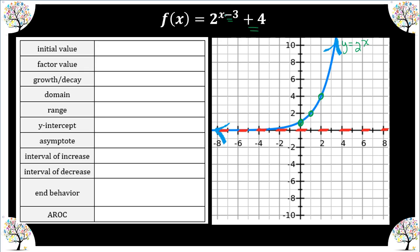This is (x - 3), so this is going to be a shift to the right — we're going to shift three to the right. And then we're going to shift four up. So I'm going to take my y-intercept, go to the right 1-2-3 and up four: 1-2-3-4. Then this last point shifts right 1-2-3 and up 1-2-3-4. My asymptote is also shifted up four units.